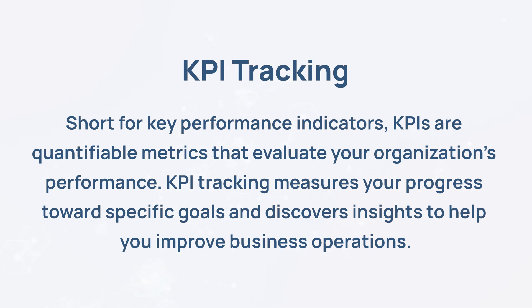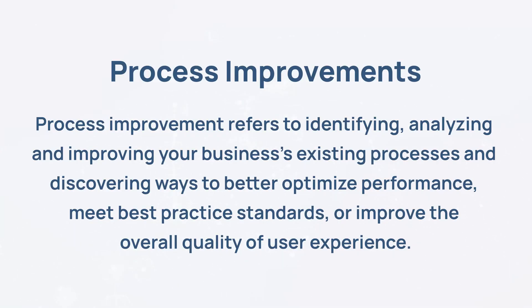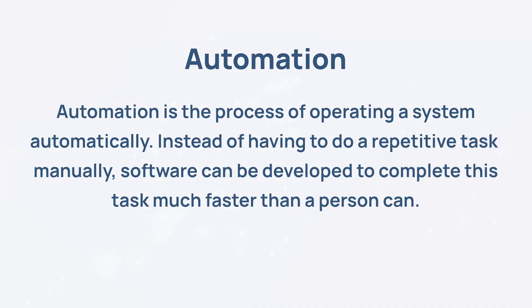So how can custom software be used? For businesses, there are countless benefits of custom software. Let's start off with KPI tracking. Short for key performance indicators, KPIs are quantifiable metrics that evaluate your organization's performance. KPI tracking measures your progress towards specific goals and discovers insights to help you improve business operations. Custom software can also be used to improve processes — identifying, analyzing, and improving your business's existing processes and discovering ways to better optimize performance, meet best practice standards, or improve the overall quality of user experience. Software can also help automate your work — instead of having to do a repetitive task manually, software can be developed to complete this task much faster than a person can.